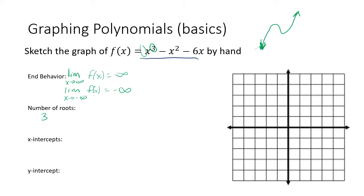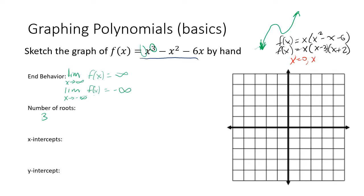So let's factor f(x). Everything has an x in it, so we can factor out x to get x(x² - x - 6). That quadratic factors to (x - 3)(x + 2). So f(x) = x(x - 3)(x + 2). Applying the zero product property and asking when this crosses the x-axis tells us there are three real zeros: x = 0, x = 3, and x = -2.